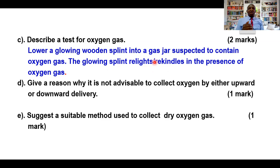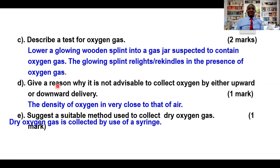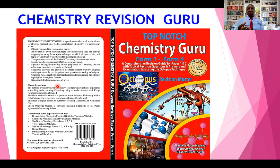Give a reason why it is not advisable to collect oxygen by either upward or downward delivery. The density of oxygen is very close to that of air. The molar mass of air is around 30 and the molar mass of oxygen is 32, so any gas whose mass is between 28 and 32 has almost the same density as air and cannot be collected by either upward or downward delivery. The suitable method for collecting such a gas is the use of a syringe.